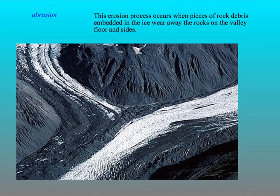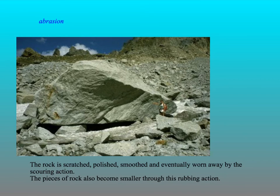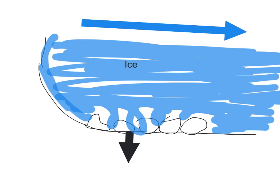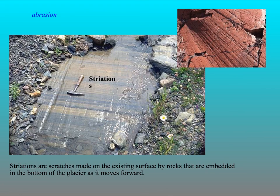Abrasion is like the sandpaper effect. Any rocks that are plucked off or picked up underneath the glacier, as the glacier moves, act like sandpaper and smooth and deepen the valley. Rocks that can't be moved are scratched, polished, smoothed, and eventually worn away — if you imagine sanding down a piece of wood, this process of abrasion is very similar. This diagram demonstrates that as the rocks underneath the glacier abrade, the valley gets deeper. On certain rocks you can see striation marks — these scratches indicate that there are rocks under the glacier being dragged along.